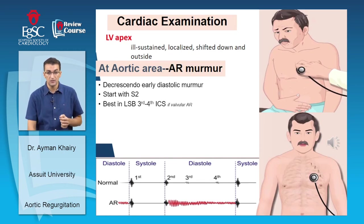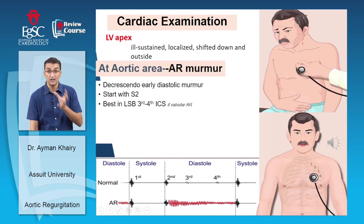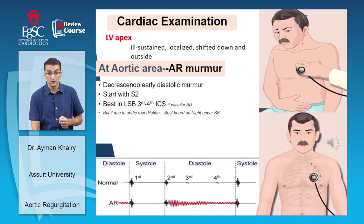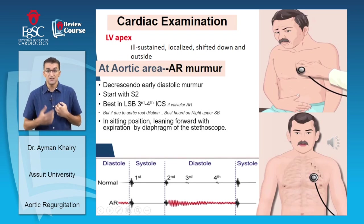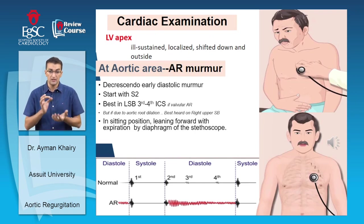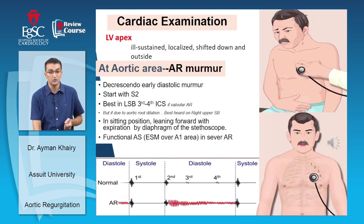The murmur is best heard with the patient sitting forward, in expiration, using the diaphragm of the stethoscope. Severe aortic regurgitation is commonly associated with a functional aortic ejection systolic murmur heard over the first aortic area due to increased forward flow.